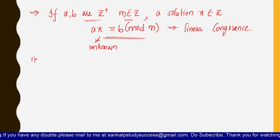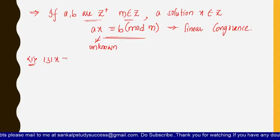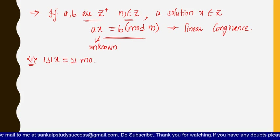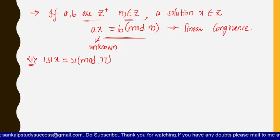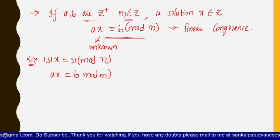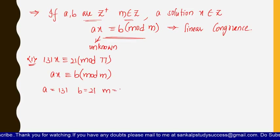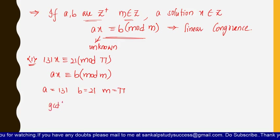Let us solve the first problem on linear congruence: 131x ≡ 21 (mod 77). This is of the form ax ≡ b (mod m). From here we get: a = 131, b = 21, and m = 77.